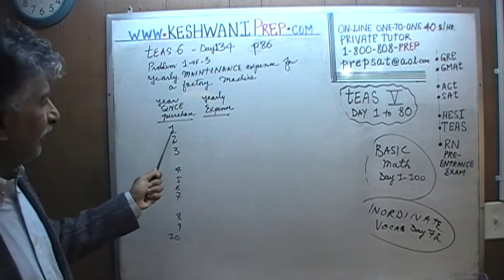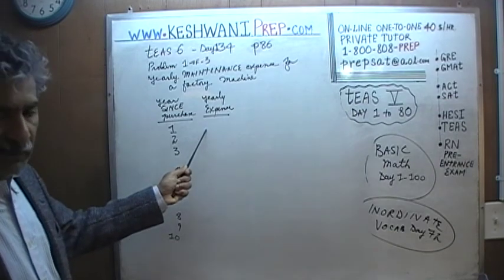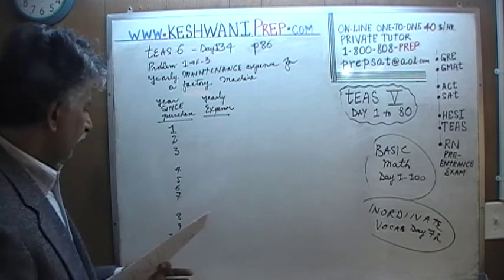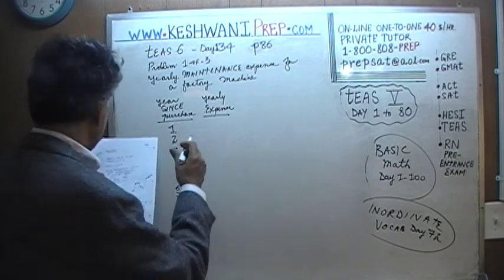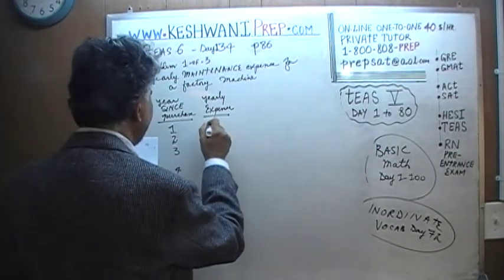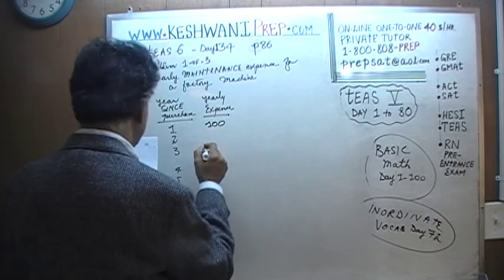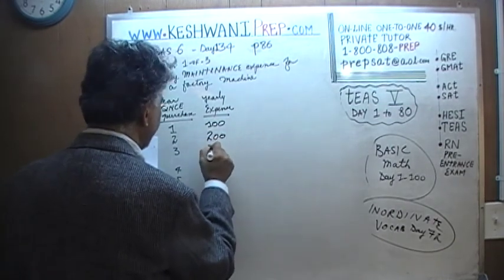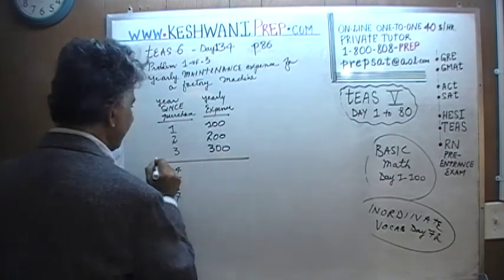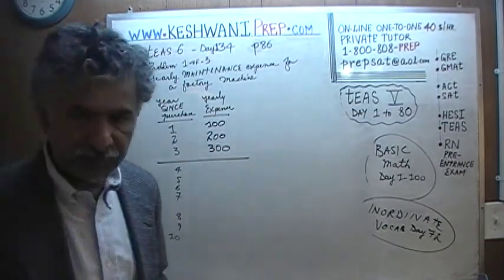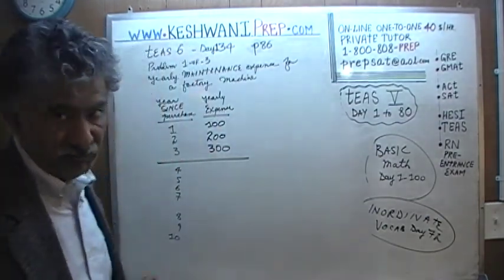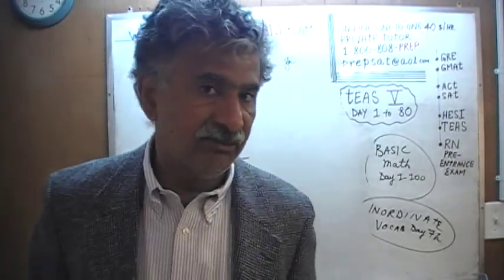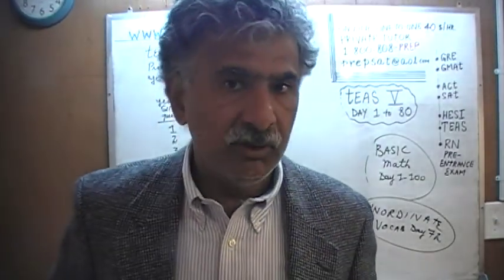At the end of the first year, the total expense to maintain the machine was $100. In the second year, the expense was $200. In the third year, the expense was $300. The key to understand here is that these are not total expenses over all the years — these are yearly expenses.